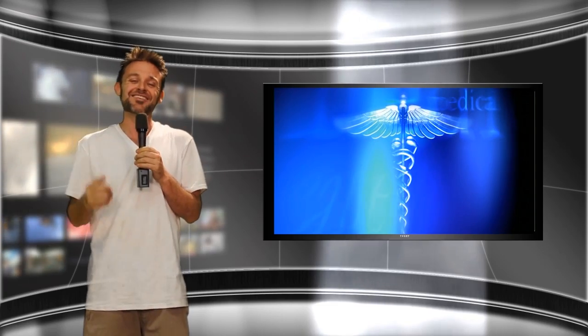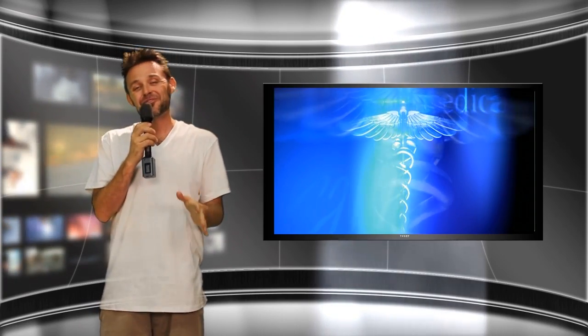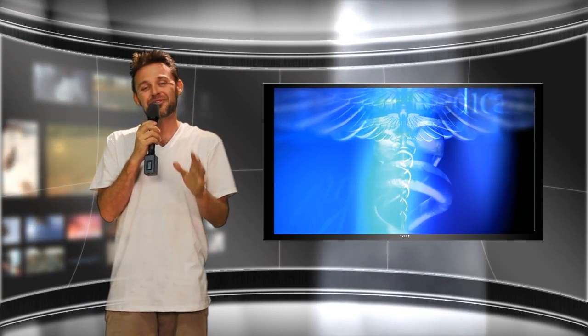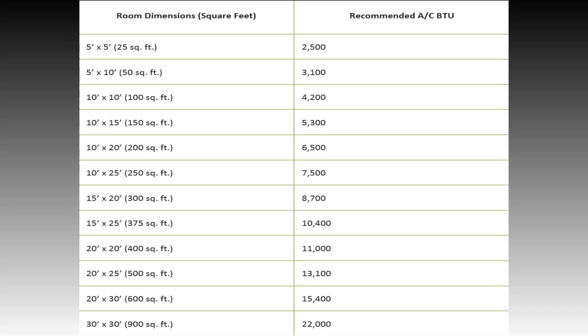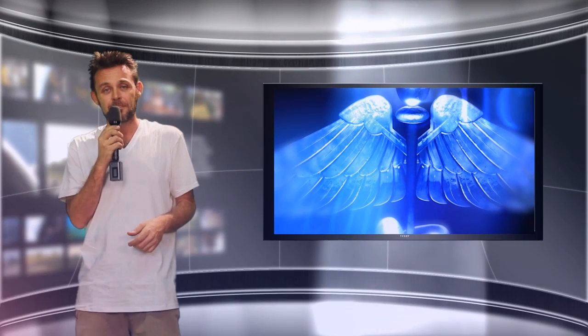Alright guys, let's start this heat calculation. First we're going to use this chart and find the square footage most similar to your grow room. I'm going to be selecting the 100 square foot one with the 4,200 BTU as my starting place.